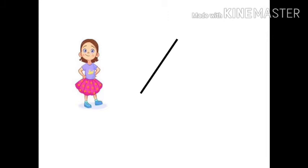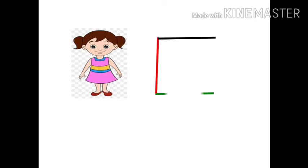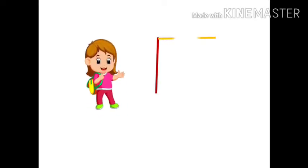Students, think about the situation. A teacher distributes 2, 3, 4 and 5 sticks of equal length to 4 students and asks them to form a closed figure. Three students make figures using 3, 4, and 5 sticks. But the student who has 2 sticks is not able to create a closed figure. Can you guess the least number of sticks required to form a closed figure? Yes, 3 sticks.